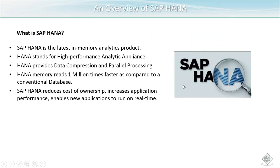SAP HANA is the largest in-memory analytic product. HANA stands for High Performance Analytic Appliance. It provides data compression and parallel processing. The data compression rate is very high in SAP HANA because of the column storage, and we have parallel processing because of in-memory. HANA can read data 1 million times faster compared to a conventional database.